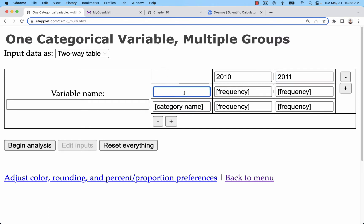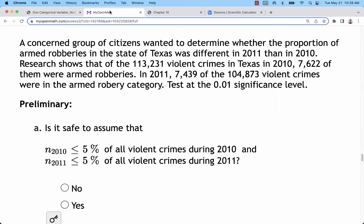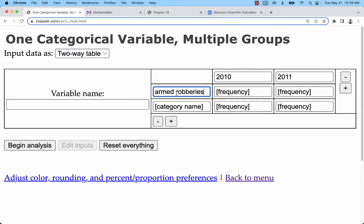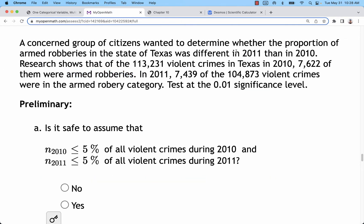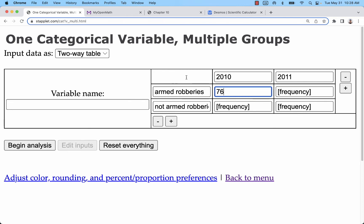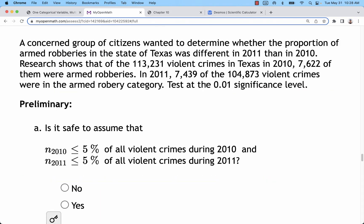Our categories are going to be successes and failures. In this problem, what we're calling a success or the outcome we're concerned about is armed robberies, and the other category outcome is non-armed robberies. In 2010, the number of armed robberies was 7,622, and in 2011 that decreased to 7,439.